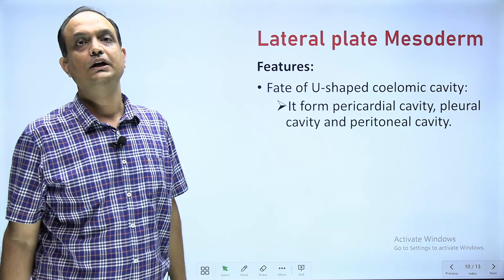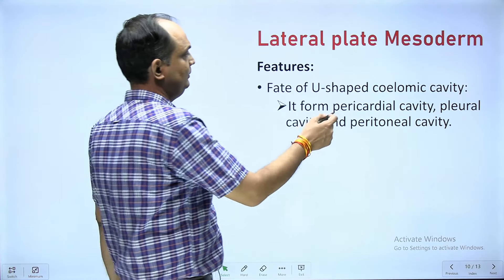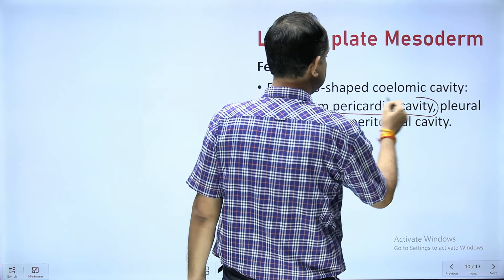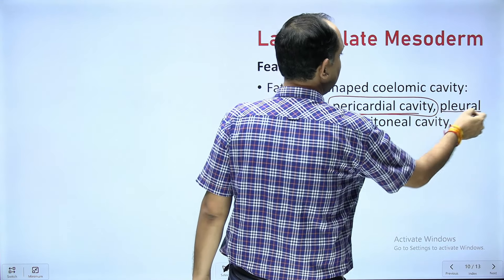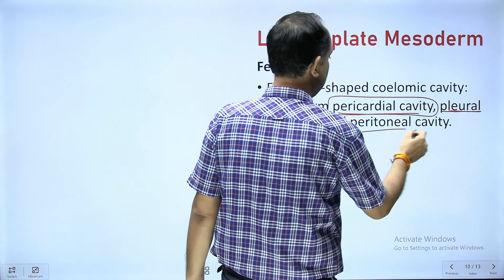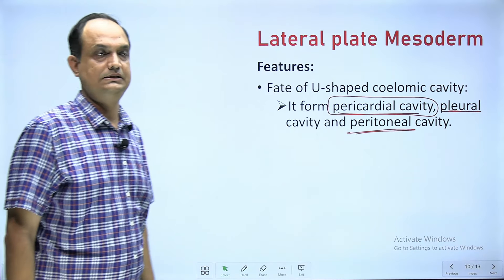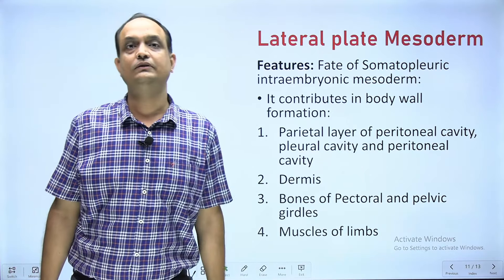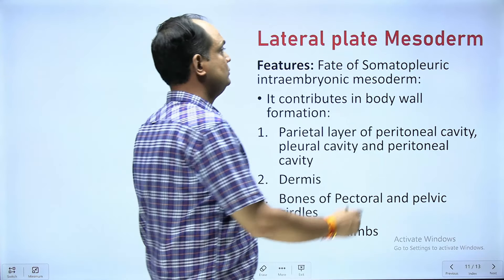The intra embryonic coelom is going to form three body cavities: pericardial, pleural, and peritoneal cavities.